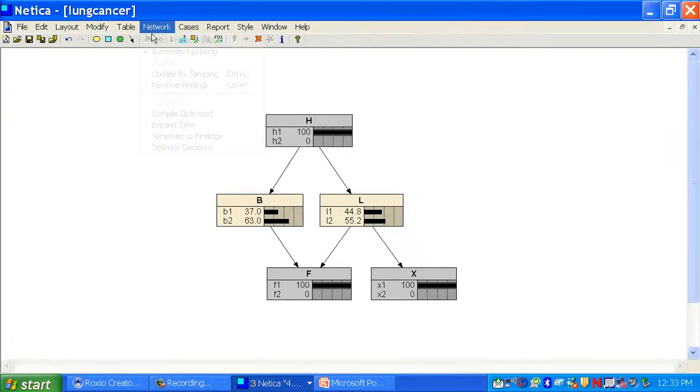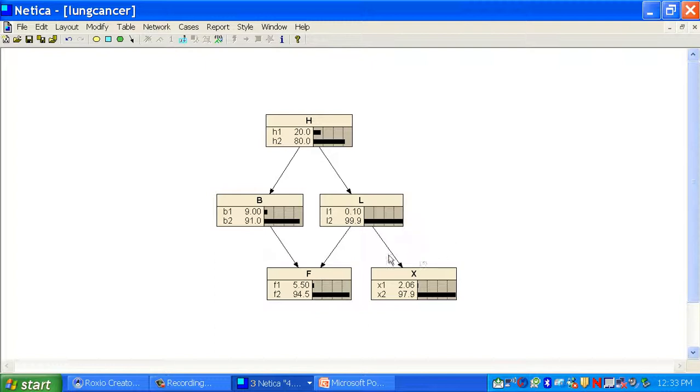All right, let's look at this. That shows basically how the inference works. But let's remove all these findings, and let me show you a point that I made before. Remember I said that bronchitis is not independent of a positive chest x-ray? Notice that it's 9. I find out the probability that you have a positive chest x-ray. It goes up a little from 0.09 to 0.0923 because of this link.